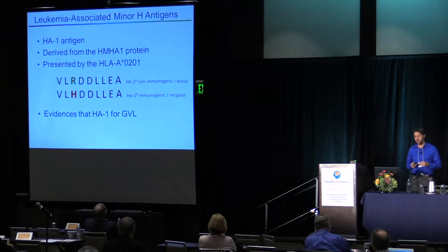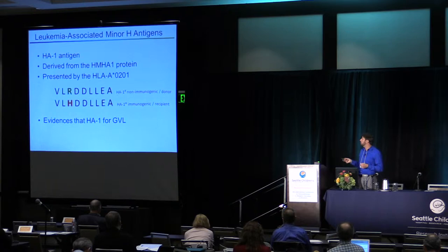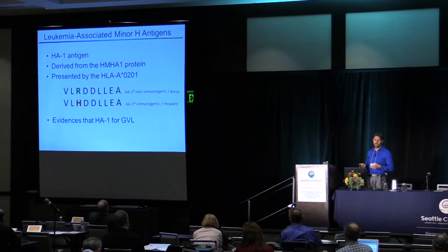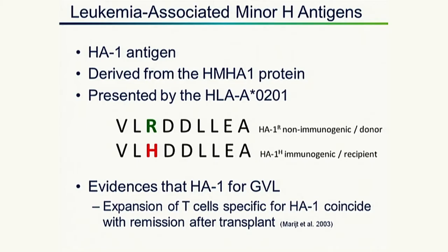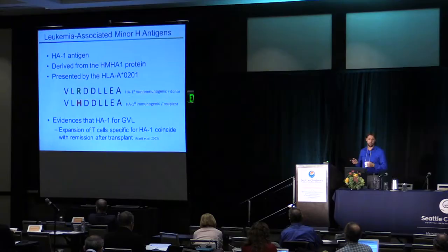One of those hematopoietic-restricted minor antigens is the HA1 antigen. HA1 is derived from a protein called HMHA1, and this antigen is presented by the common allele HLA-A2. A non-immunogenic peptide has arginine as the third amino acid; due to genetic polymorphism, histidine replaces it. There is strong evidence that HA1 is important for the graft-versus-leukemia effect, coming from a 2003 paper showing that HA1-specific T-cells expand and that expansion coincides with remission after transplant.